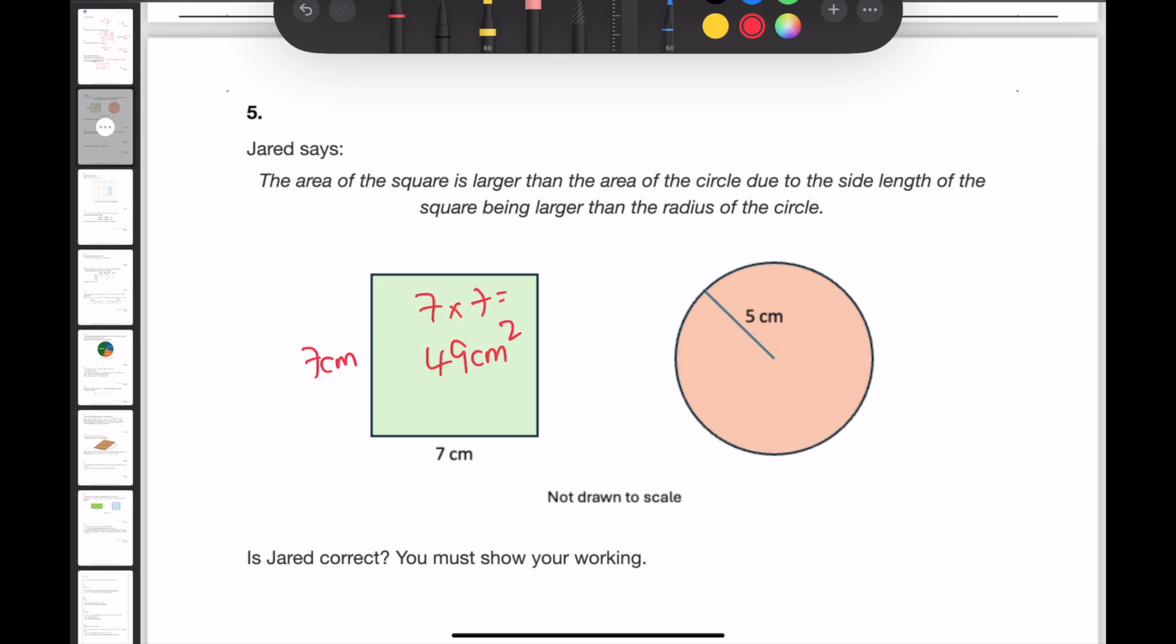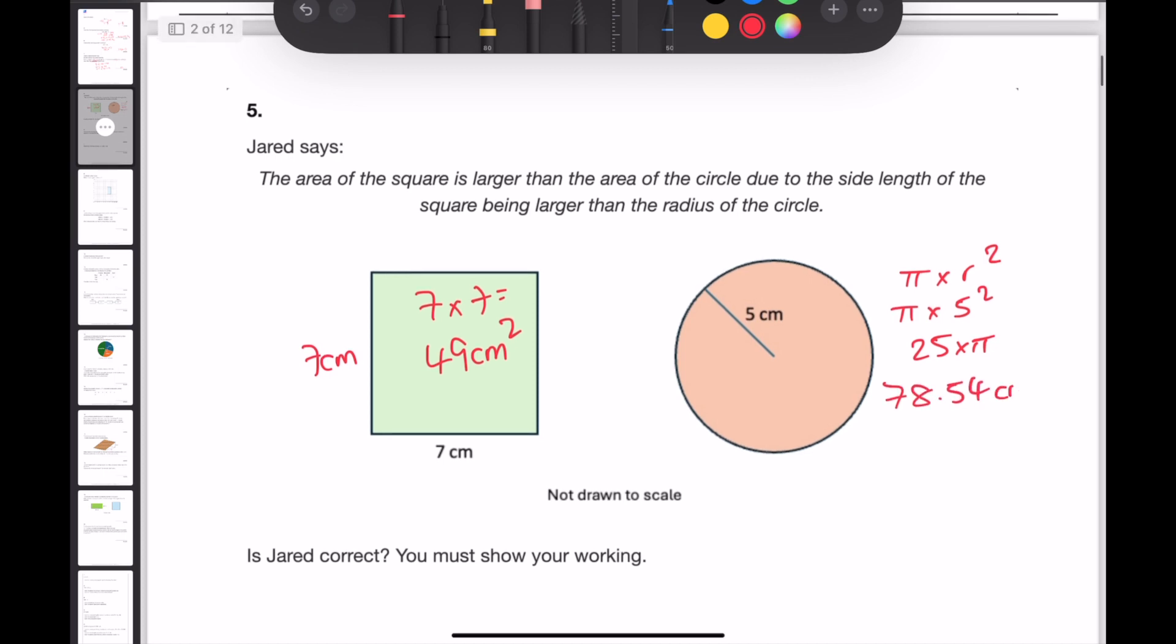To calculate the area of the circle, we use the formula pi times the radius squared. Pi times 5 squared is the same as 25 times by pi. Typing this into my calculator would give 78.54 centimeters squared to two decimal places. So to answer this question, is Jared correct? No. The area of the circle is larger than that of the square.